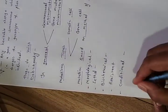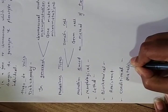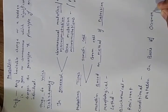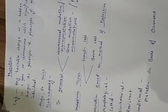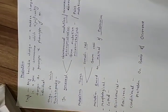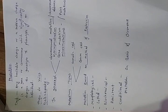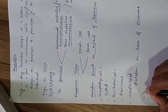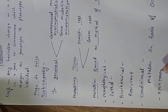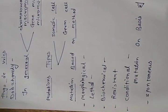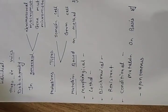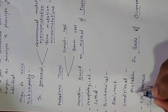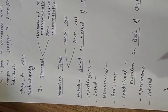Mutations can also be classified based on occurrence. If the mutation happens naturally without any interference — suddenly in nature — it is known as a spontaneous mutation. If it is artificially induced, it is called an induced mutation.